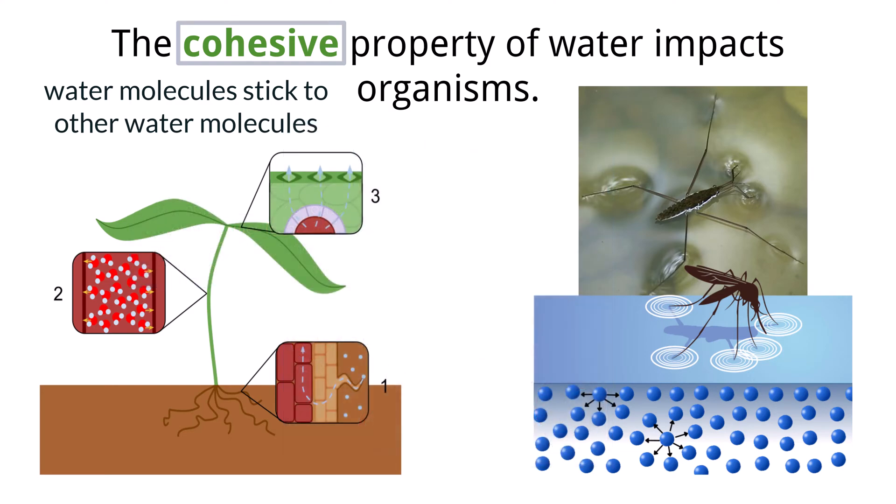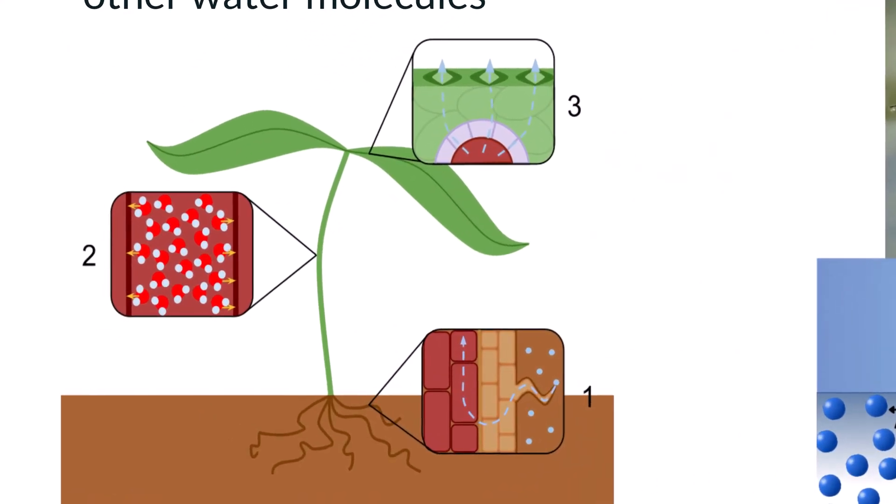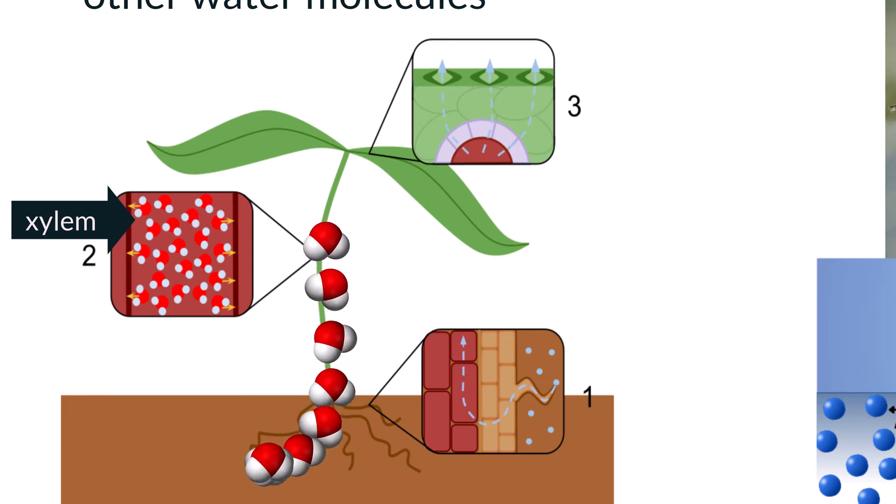Cohesion between water molecules plays an important role in biological systems, like when water is moved within plants. Plants have specialized tissue within their root, shoot, and leaf systems called xylem that is used to transport water and nutrients. Water is absorbed by the roots of the plant and moves up through the stem to the leaves to transport nutrients and be used for photosynthesis.